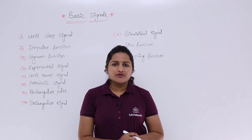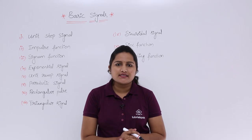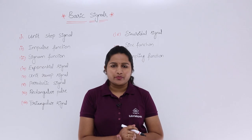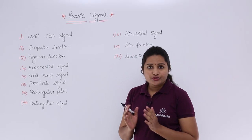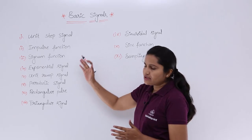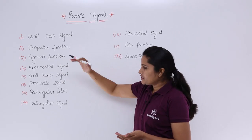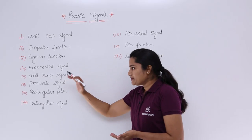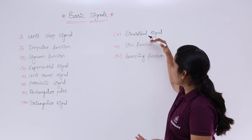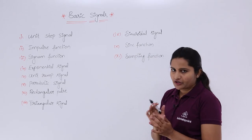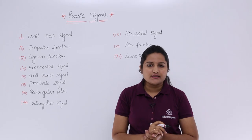In this video we are going to discuss basic signals, and here we are going to know how many basic signals are there throughout the Signals and Systems topic. There are 11 basic signals which we are going to use mostly in this subject: unit step signal, impulse function, signum function, exponential signal, unit ramp signal, parabolic signal, rectangular pulse, triangular signal, sinusoidal signal, sinc function, and sampling function.